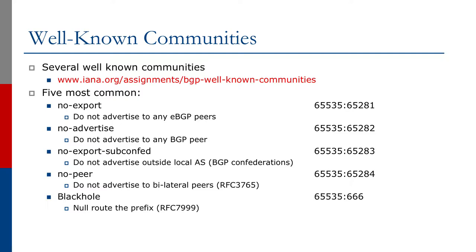What the no-peer community does is let operators know not to advertise this prefix to peers — bilateral peers, as opposed to upstream transit providers. Some operators have used it, but many are simply unaware that this useful community exists. The idea behind it is to ensure that we don't end up filling the global default free zone with traffic engineering prefixes in BGP.